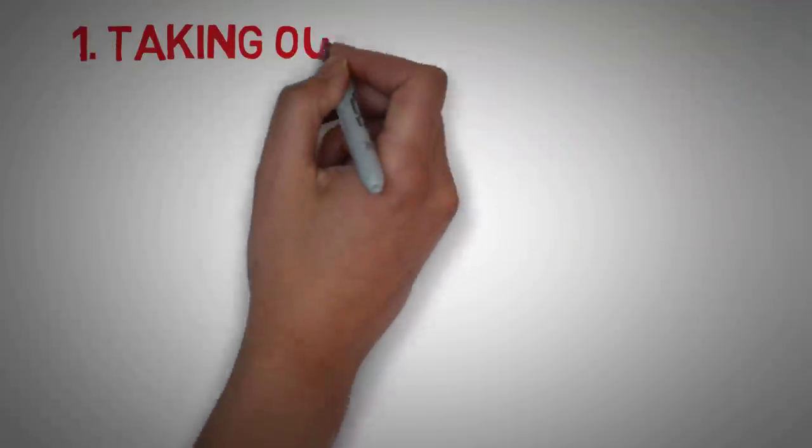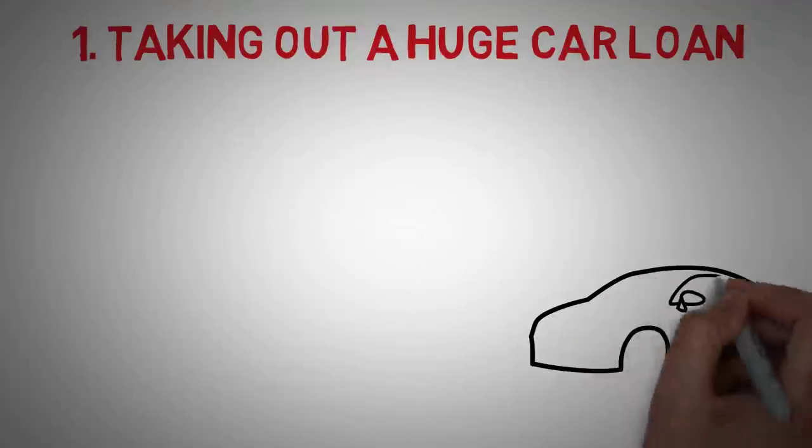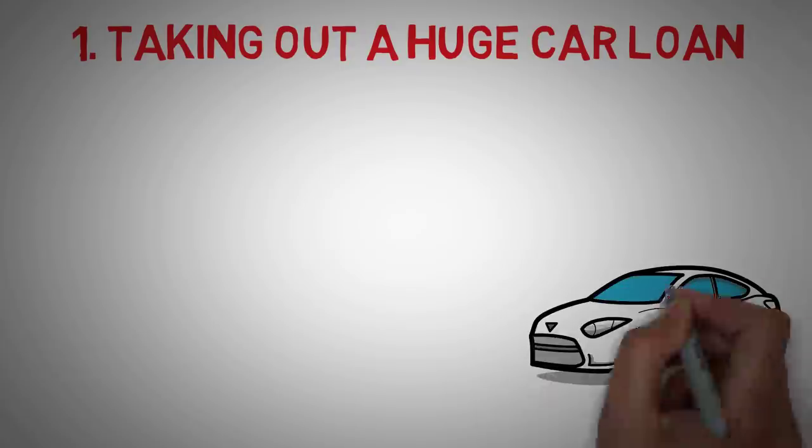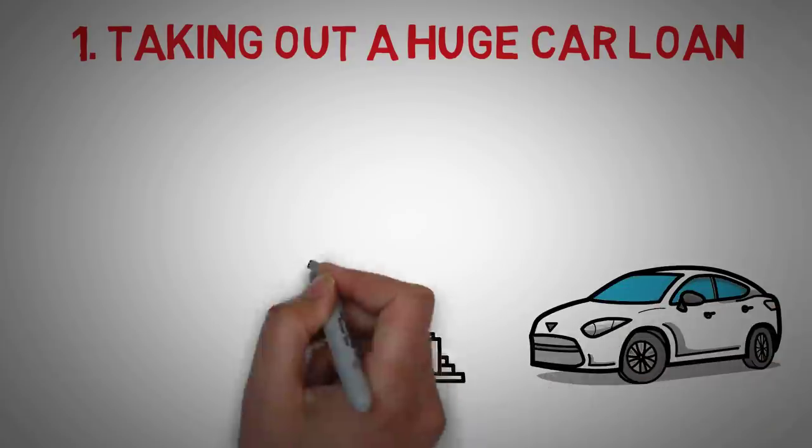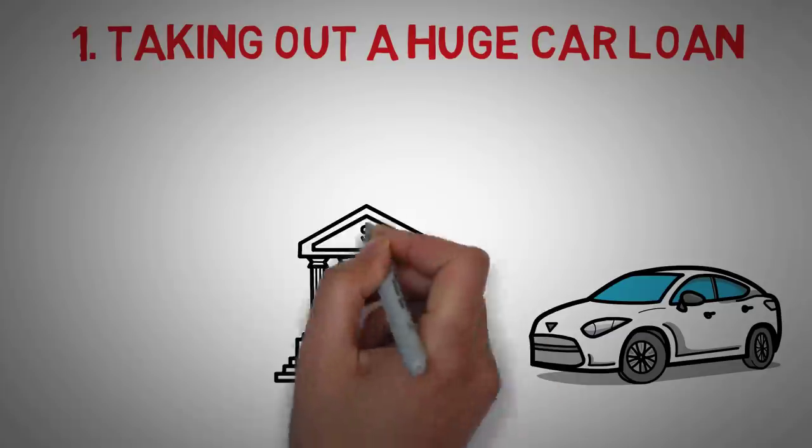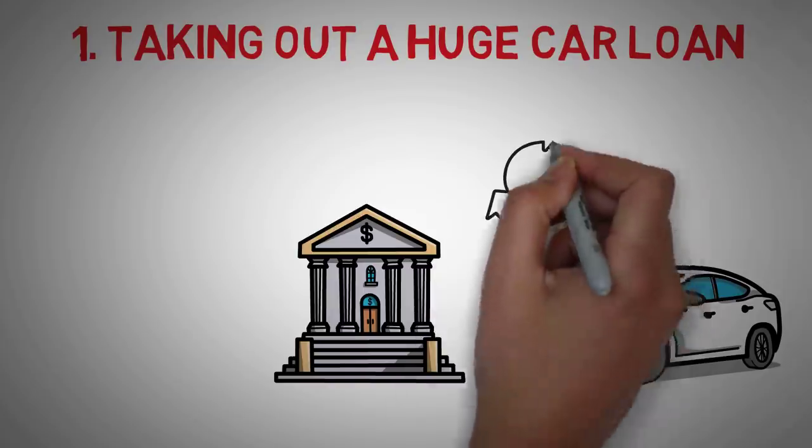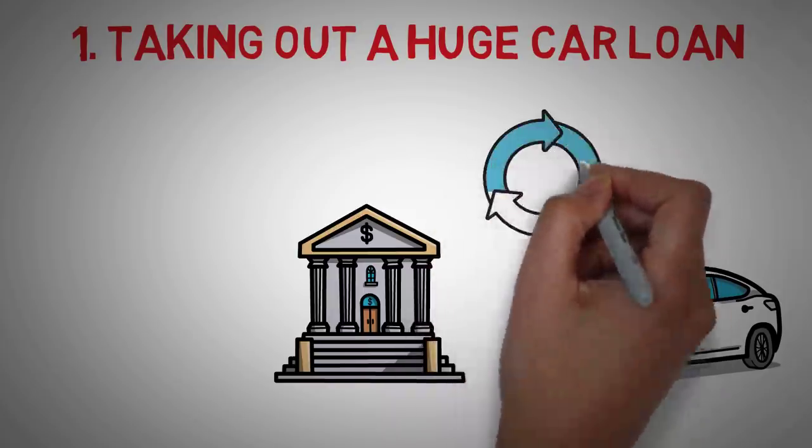Number 1. Taking out a huge car loan. When your peers get their first full-time job, it's likely they reward themselves with a brand new car. The car might be shiny and up-to-date, but what comes with it is a large loan that won't be paid back for many years.